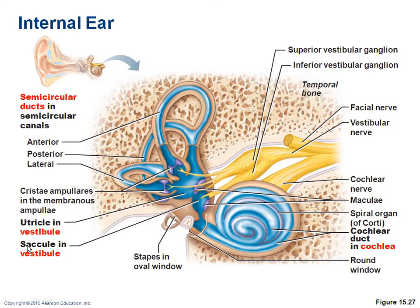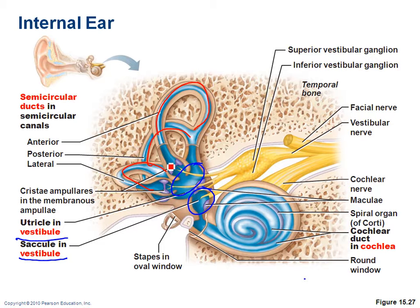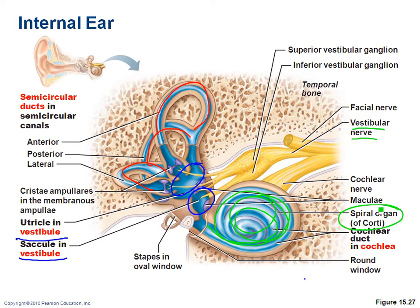The internal ear has three main structures: the vestibule, the semicircular ducts, and the cochlea. The cochlea is the organ of hearing, and inside it is the spiral organ — formerly called the spiral organ of Corti. The spiral organ is the receptor that actually allows you to hear, but it's housed in the cochlea.